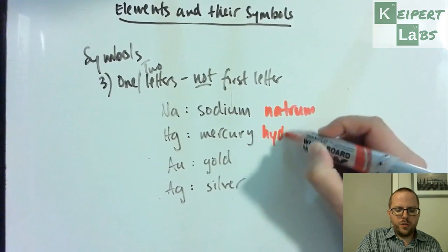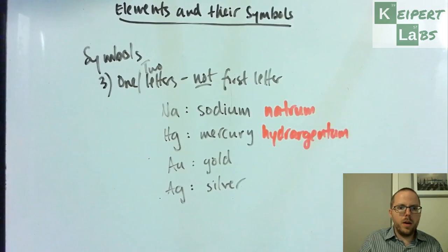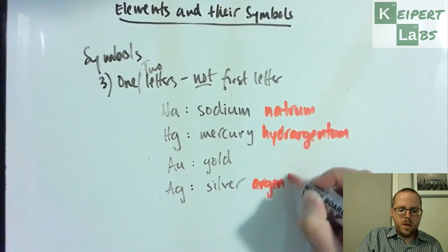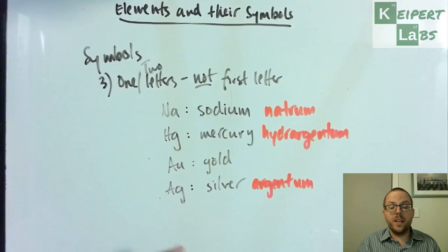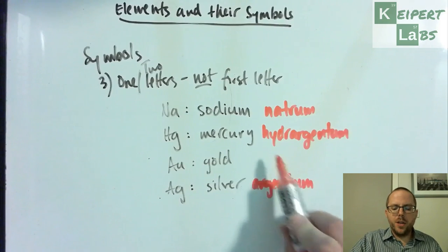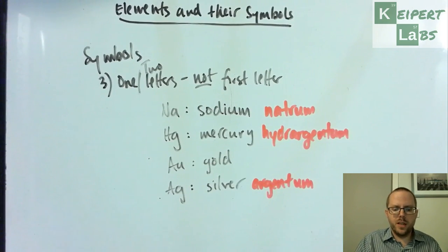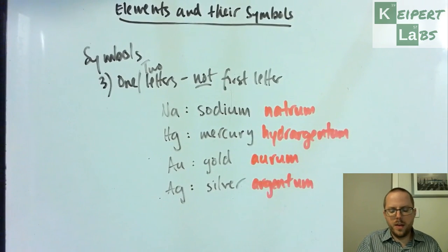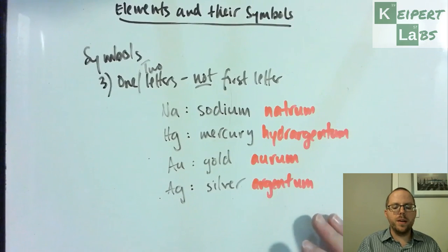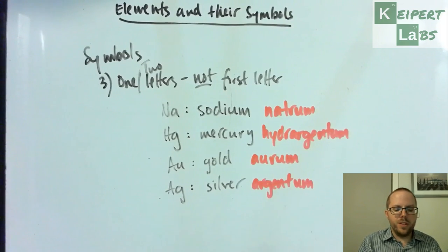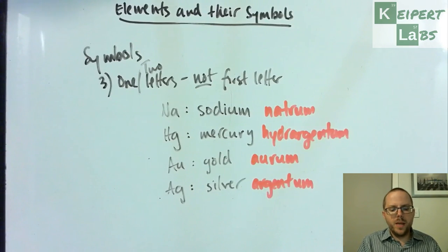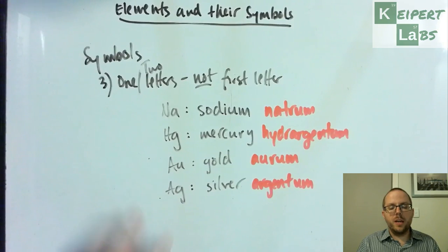Mercury used to be known as hydrargyrum, which relates to quicksilver. Argentum is for silver - it's also where the country Argentina gets its name because it was a source of silver. Gold is aurum. Lead, antimony, and tin are other examples of elements that had a previous name, often in Latin, that the symbol came from, and then at some point in the past we adopted a different name for it. The symbol has stuck because of its historical development, and this way we can distinguish each element by a symbol.